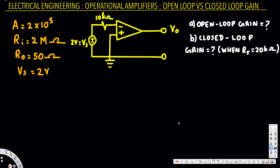In this video we are going to talk about open loop gain and closed loop gain, and we are going to see how to calculate the output voltage. To calculate open loop gain, the equation is: V_o equals A times the input voltage, where A is the open loop gain.